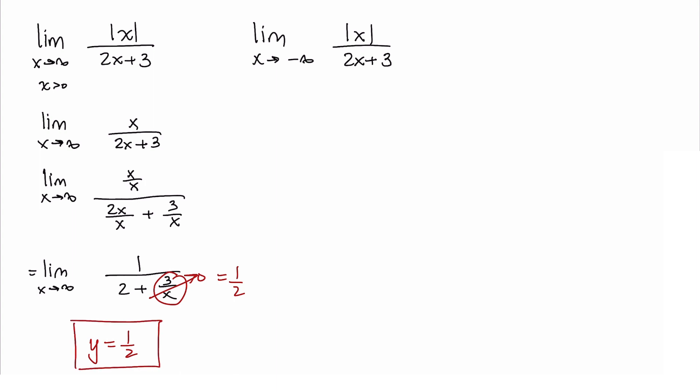Now let's see if the other limit gives us the same thing. As x approaches negative infinity, the absolute value of x is going to be negative x because x is less than zero.